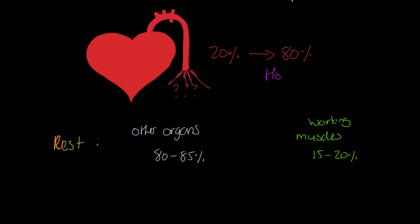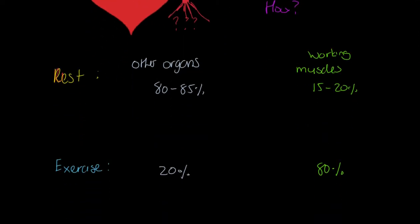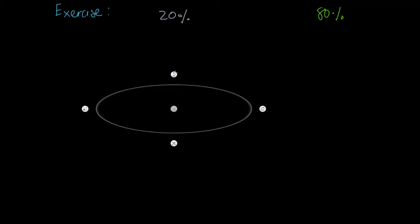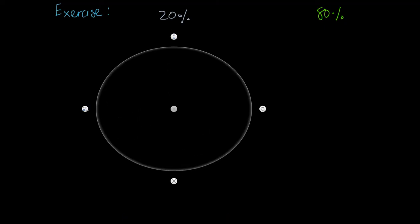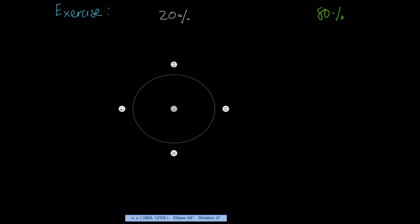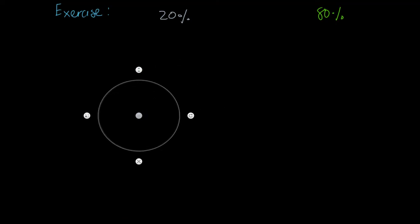So therefore we must ask the question: how does that happen? There are actually two stages to how we answer that. The first is that we have blood vessels specialized in the achievement of this. I'm going to draw a blood vessel for you. This blood vessel here has its outer layer.